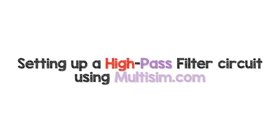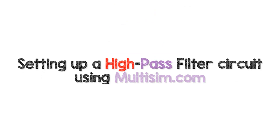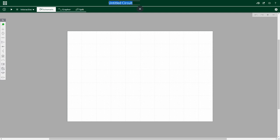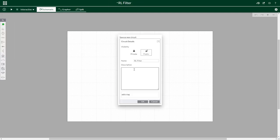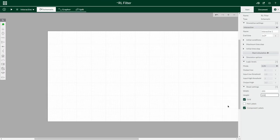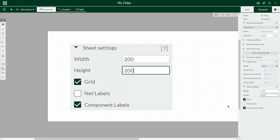Let's make a high pass filter on multisim.com. Make a new file and save it. Make it public or private. And the config pane lets us change all sorts of attributes for components and simulation and the sheet. I usually make the sheet larger and turn off net labels, and sometimes the grid, and sometimes component labels, to make it look neater.